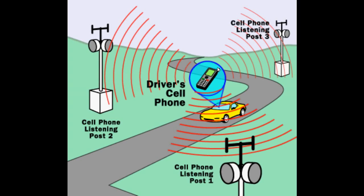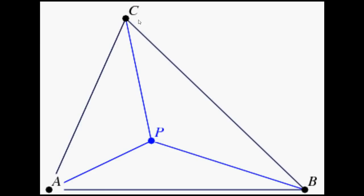To get more accuracy, they take the help of three or four towers — however many towers are giving access to that cell phone. There is a formula called the triangulation formula, which the software uses to track the exact or very close position. This formula calculates the approximate position based on the angle of the frequencies, signal strength, and several other factors.